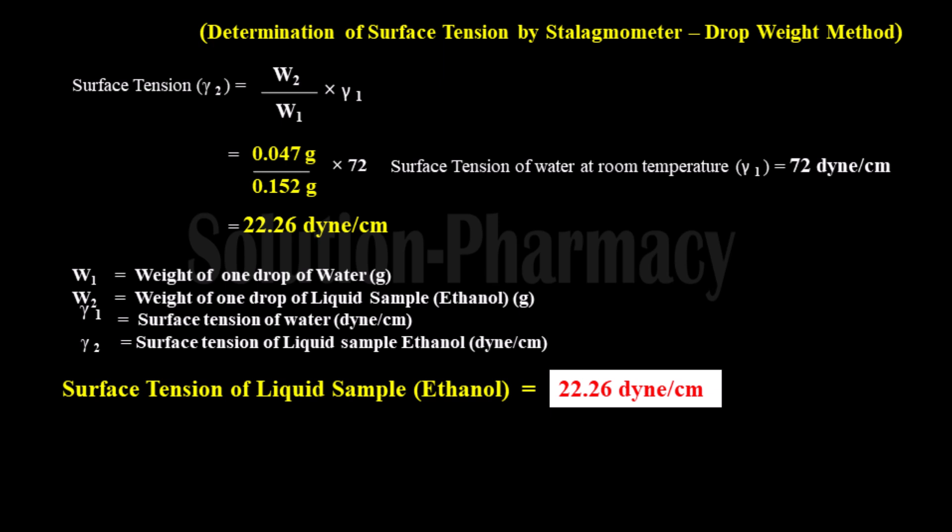Putting all values into the formula: w2 = 0.047 grams, w1 = 0.152 grams, multiplied by 72. After calculation we get 22.26 dyne per centimeter. So the surface tension of the given sample of ethanol at 25°C is 22.26 dyne per centimeter. This is how we can calculate the surface tension of any liquid by drop weight method using a stalagmometer. Thank you very much for watching this video.